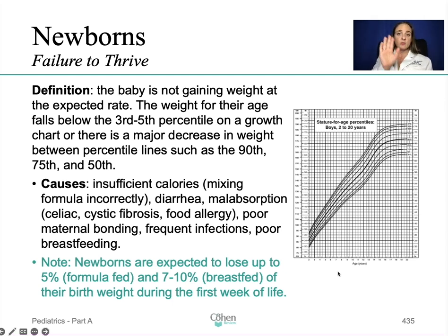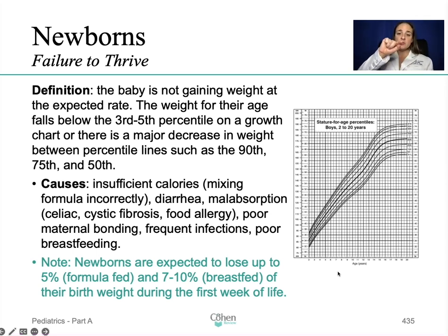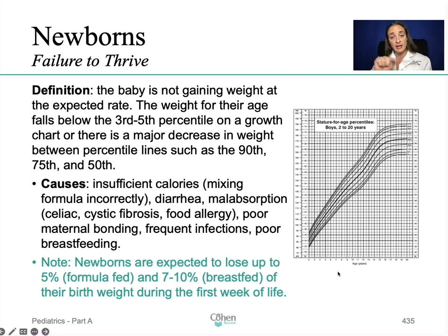There is one chart for each measurement — one chart for head circumference, one for weight, one for height. With every visit you plot the result as a dot, and when you compare every visit you can follow the dots. The idea is that the dots will follow one of those lines on the chart — following that curve, maybe slightly above or below, but what you want to make sure is that it doesn't drop way below or go way above.